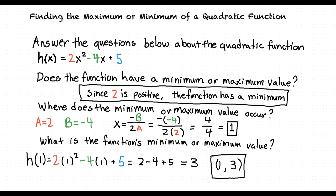So just to make sure I'm getting this straight: to find the maximum or minimum of a quadratic function, we must first find out if the function has a minimum or maximum. To do so, we check to see if the leading coefficient of the quadratic function is positive or negative. If it is positive, the function will have a minimum. If it is negative, the function will have a maximum value. Once we have figured that out, we can find the x value for the vertex by using the formula x equals negative b over 2a. Once we have found the x value for our minimum or maximum, we can plug that value into our original equation to get the y value for the minimum or maximum. It sounds like you've mastered this topic.